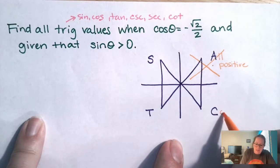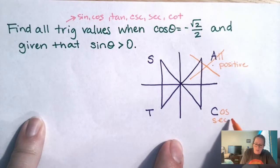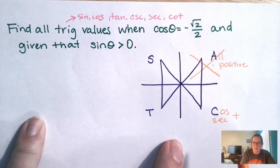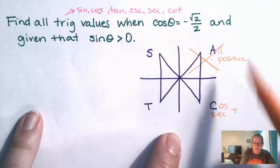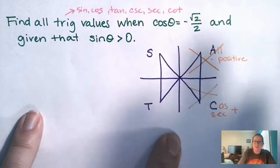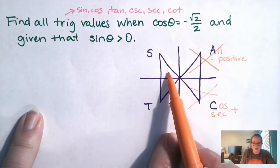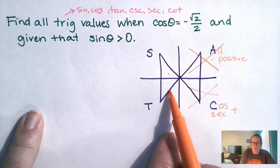This one says that cosines and secants are positives, right? Okay, well, positive says negative, so it can't be here. So we just narrowed it down to two. We're now in quadrant two or quadrant three. We don't know which one yet.